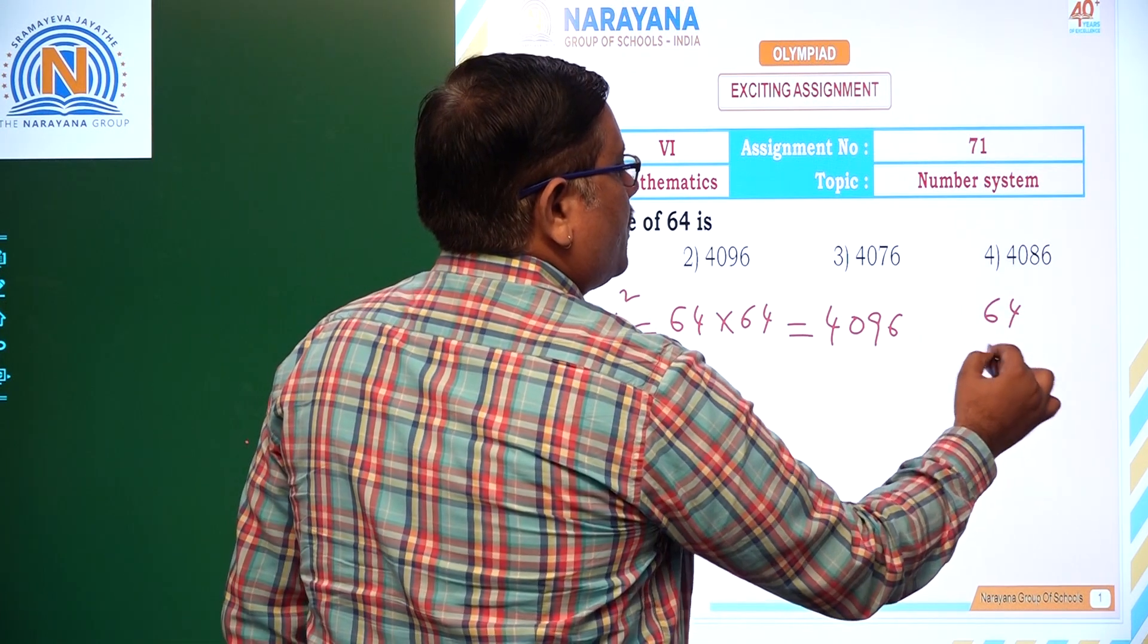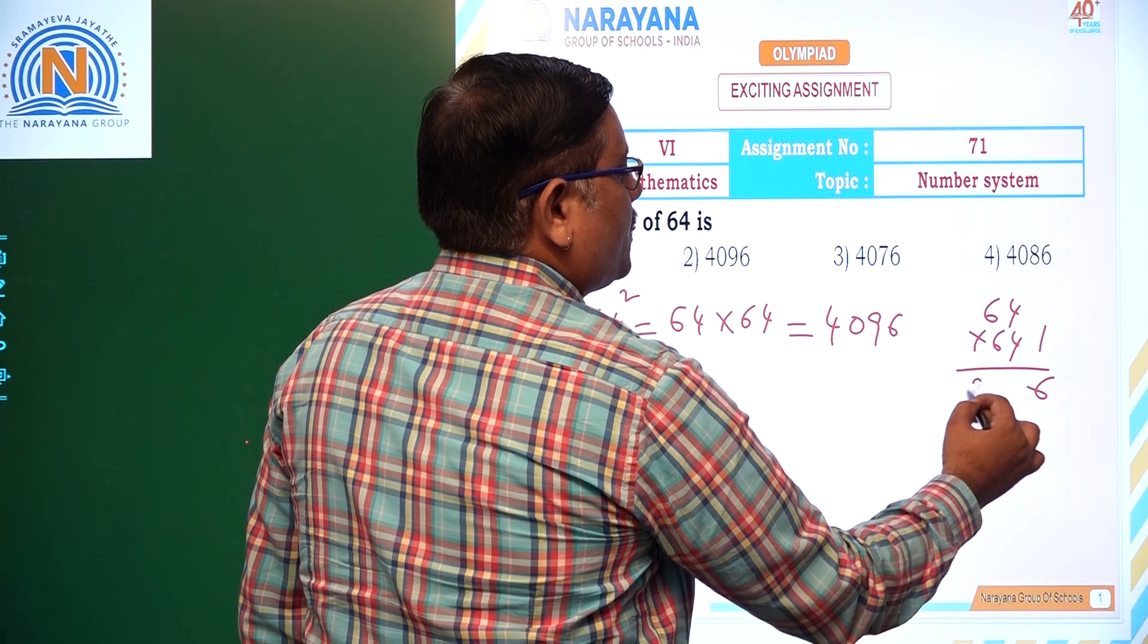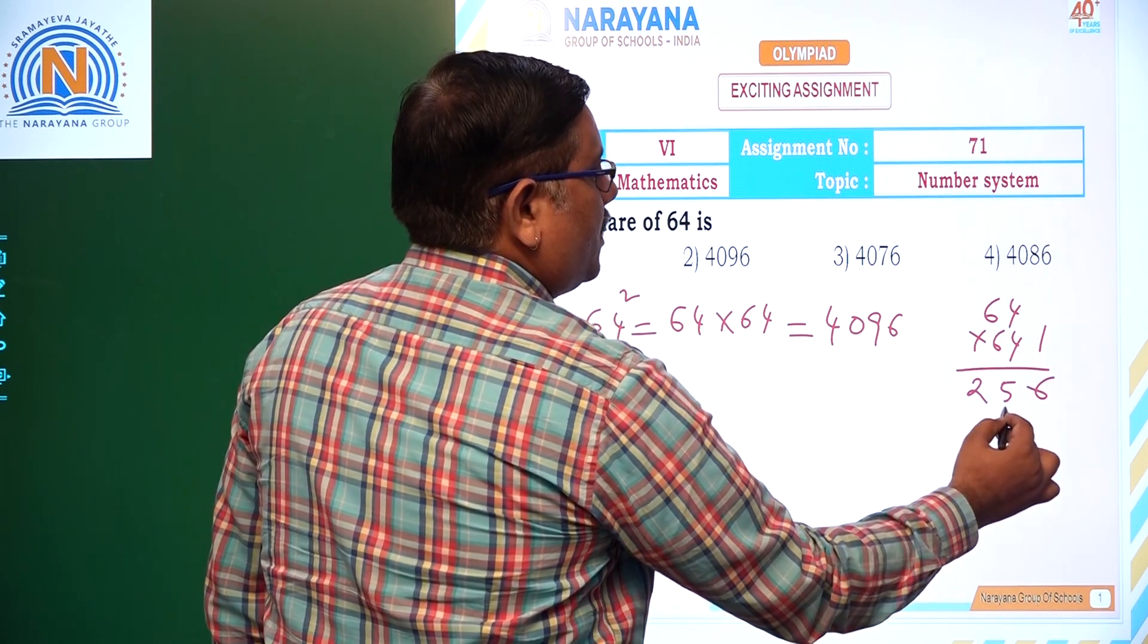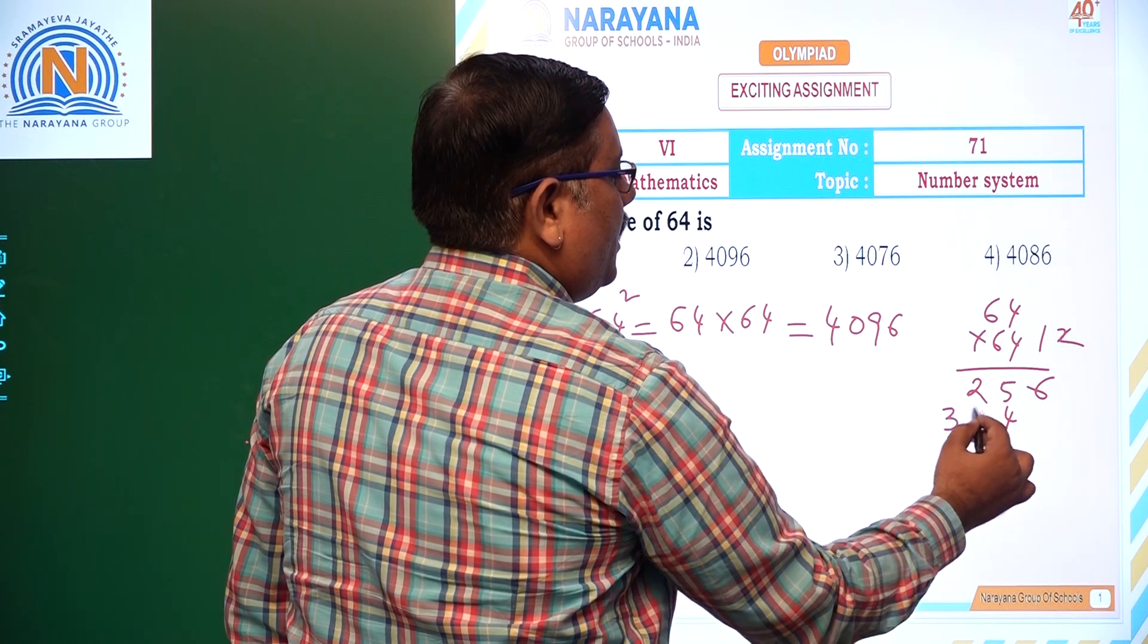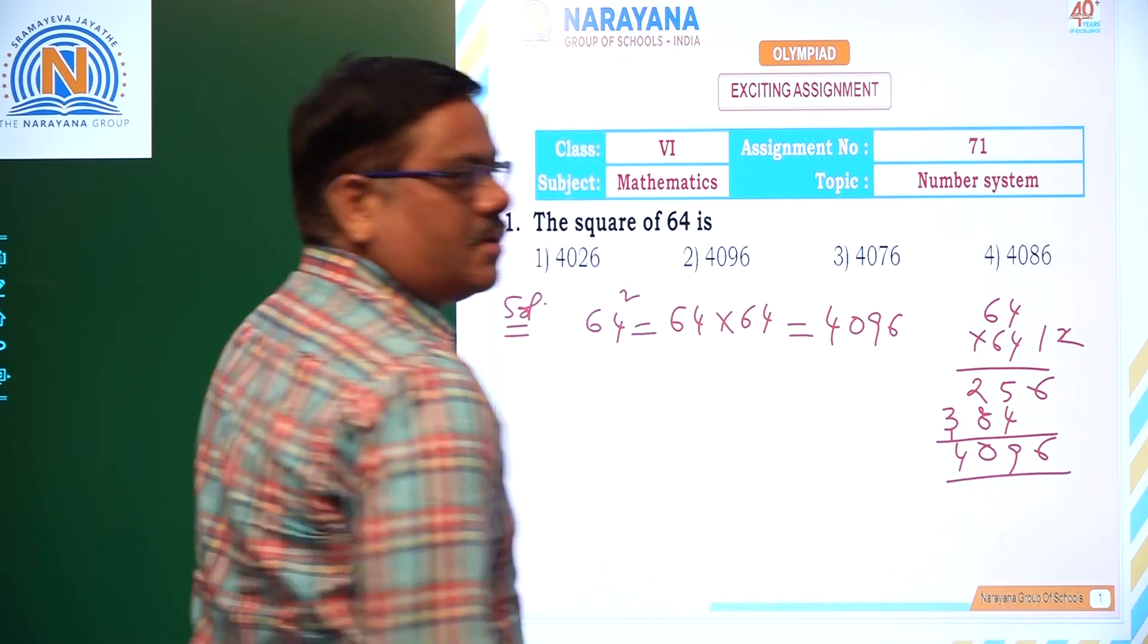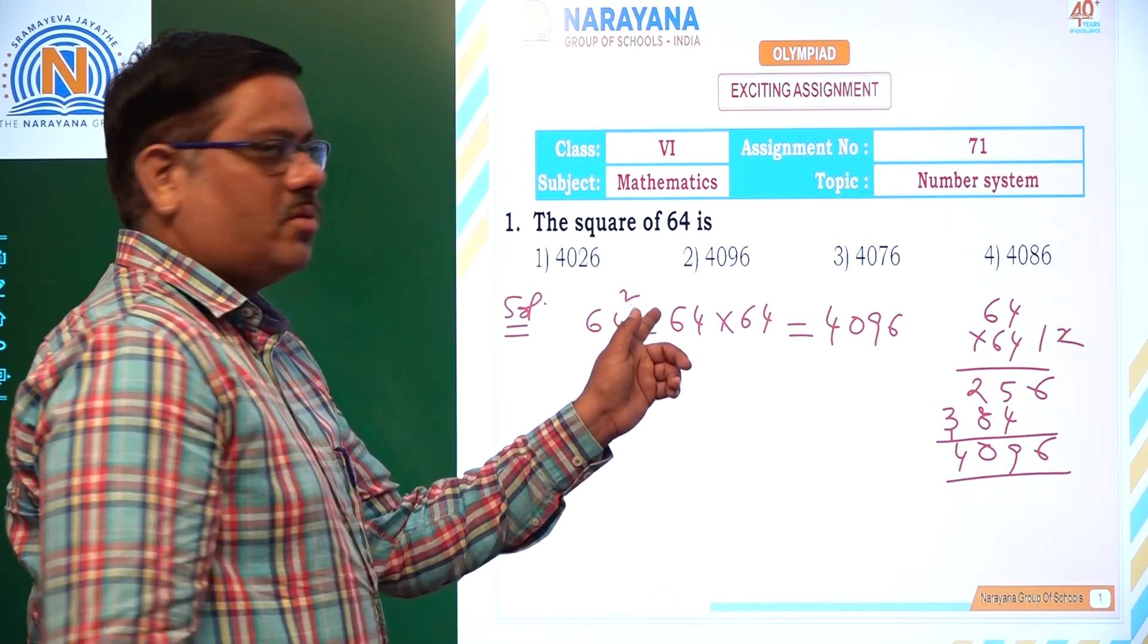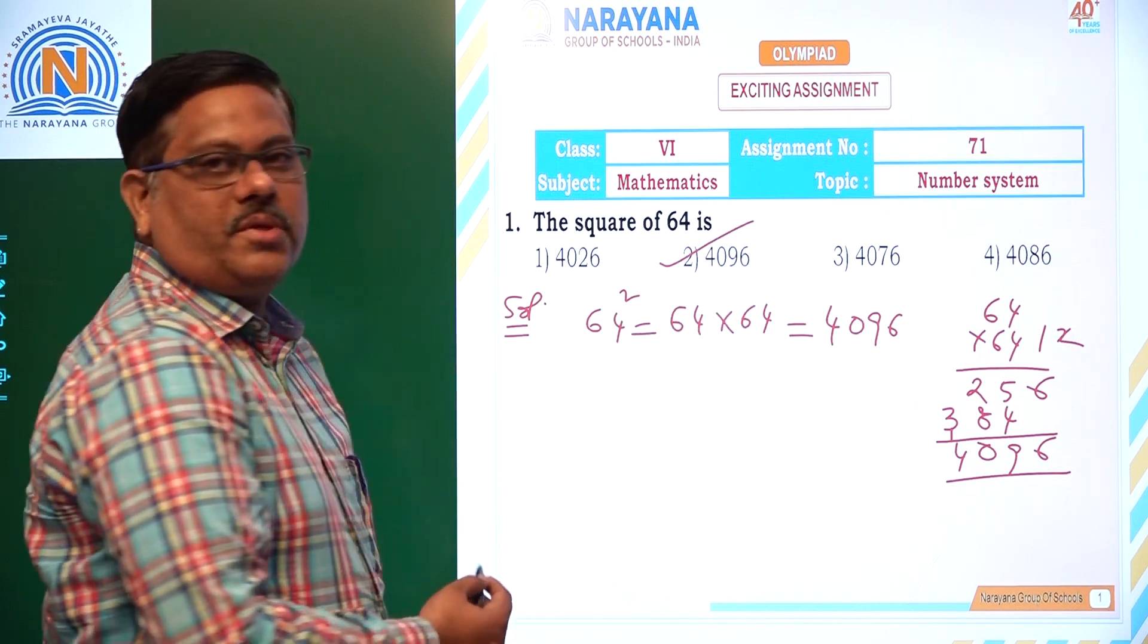How to do it? 64 times 64. That is 4 times 4 is 16, 4 times 6 is 24 plus 1 equals 25. Now 6 times 4 is 24, 6 times 6 is 36 plus 2, that is 38. So that is going to be 6, 9, 10, which means 4096. That is the value for 64 squared or square of 64. 4096 is the second option for us.